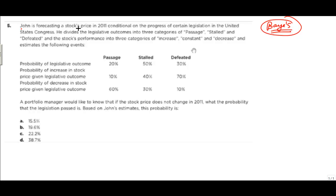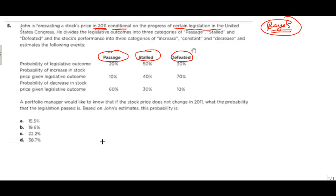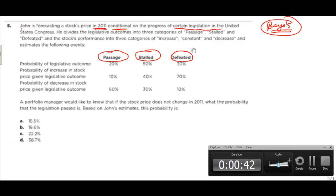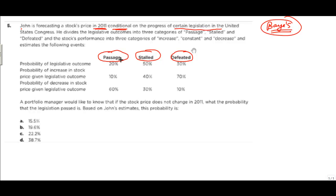John is forecasting a stock price in 2011, conditional on the progress of certain legislation in the US. The outcomes are divided into three categories: the legislation is passed, stalled, or defeated. So there are three cases.